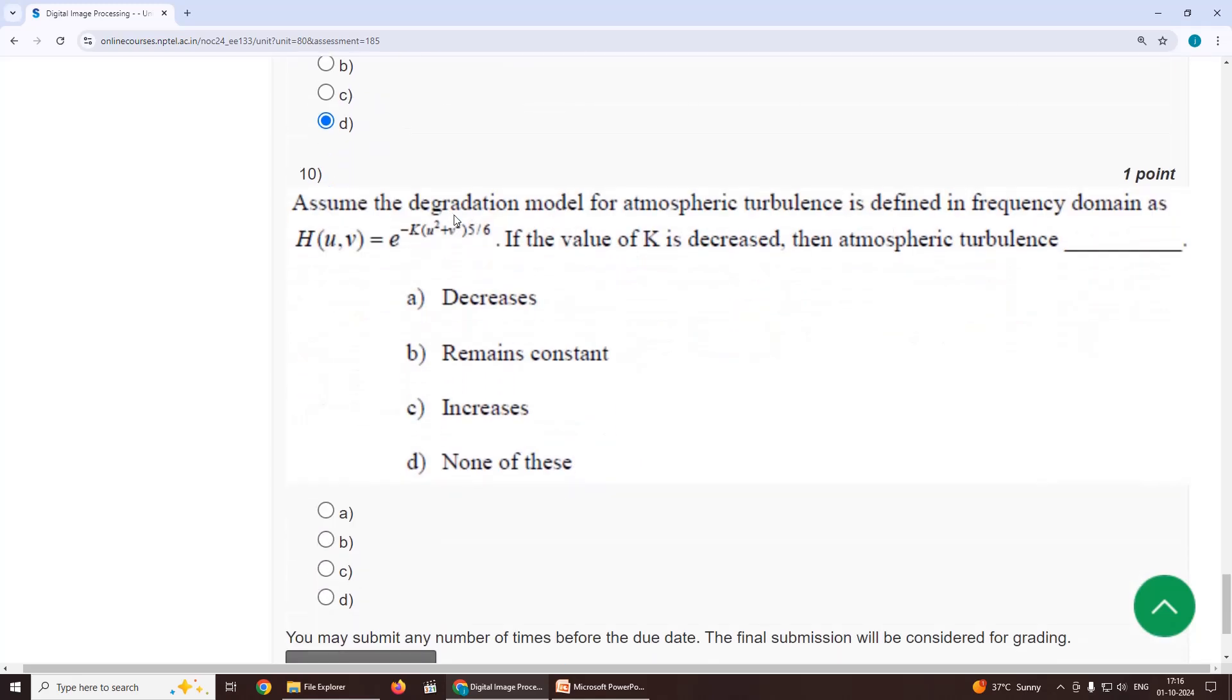Last one, assume the degradation model for atmospheric turbulence is defined in the frequency domain. This is the given equation, where K is a constant. If the value of K is decreased, then the atmospheric turbulence also decreases, option A. Our suggestion is option A.